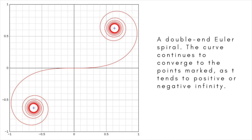The curvature starts at zero in the straight section, increases linearly with the curve length, and finally becomes equal to that of a circular curve. Considering curvature as a signed quantity, the curve forms a double spiral with odd symmetry and a single inflection point at the centre.